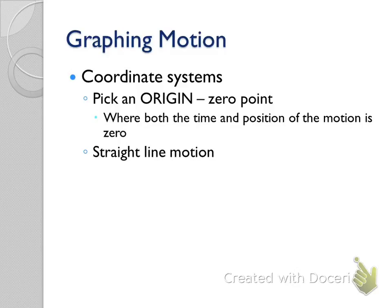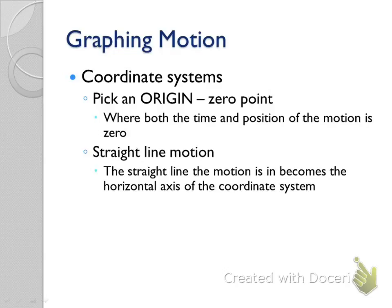If you always chose to put your origin at ground level, you could — but putting it at the start of the motion is most simplistic because it gives us two variables equal to zero. In straight line motion — either moving purely horizontally or purely vertically — the line of motion becomes the axis of the coordinate system, and we're looking at horizontal first.